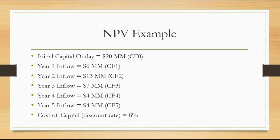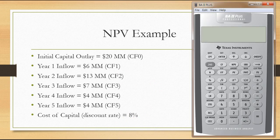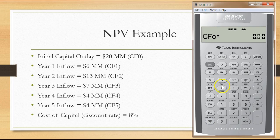Let's look at the calculator. We turn the BA II Plus on and we're going to use two functions mainly: cash flow and NPV. If you press the cash flow button, you'll see CF zero. If you don't see CF zero, that means you have some cash flows stored in the function. It's always best practice to clear those out — press second and clear work. That will clear everything, and your cash flow should now say CF zero equals zero.